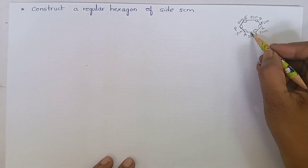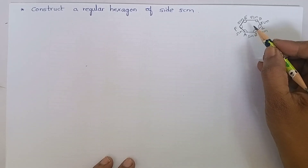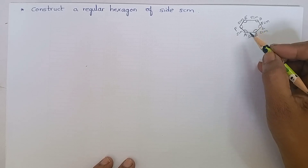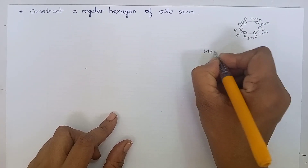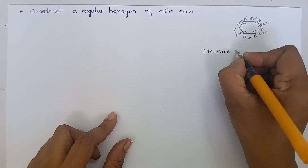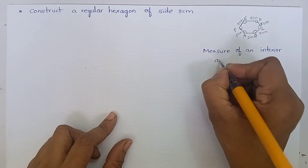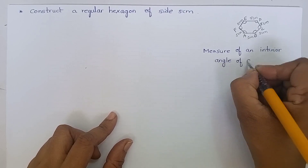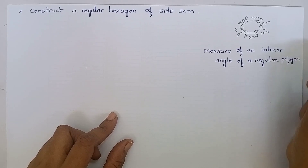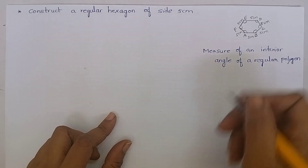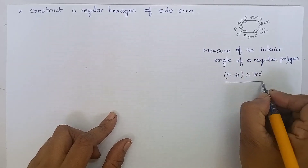Then, what about the angles? Angles are also equal. What is the interior angle of a regular hexagon? To find out this, let us take the help of the formula for the measure of an interior angle of a regular polygon.